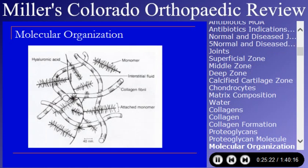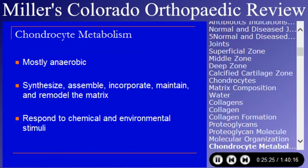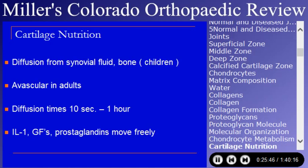The molecular organization has glycosaminoglycans intermixed with collagen, giving them structural support. Chondrocyte metabolism is mostly anaerobic; children have some aerobic metabolism early. Chondrocytes synthesize, assemble, and maintain the extracellular matrix and respond to chemical and environmental stimuli. The cartilage is avascular — its nutrition is primarily diffusion from synovial fluid.